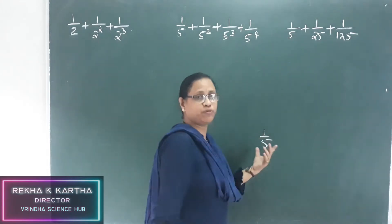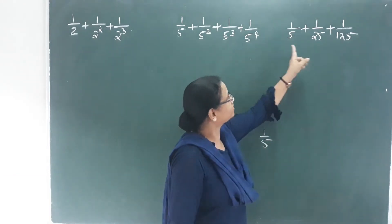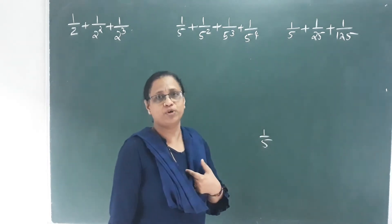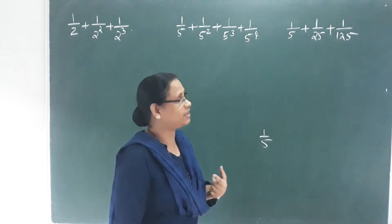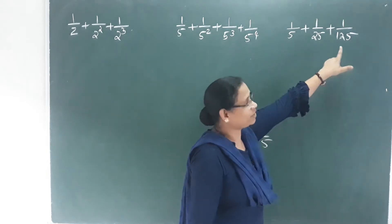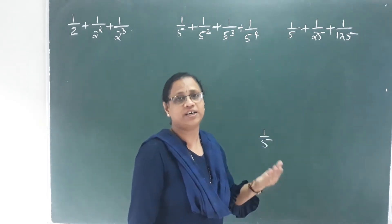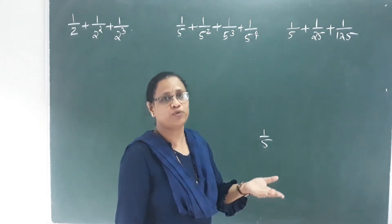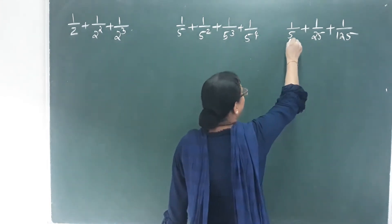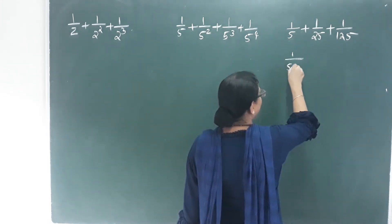We start with 1 by 5. This is the decimal formula we have to answer. Let's do it. To make this formula, if I take this fraction 1 by 5, I multiply by 2.